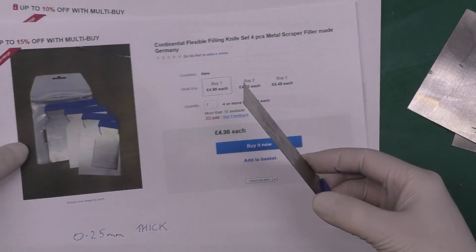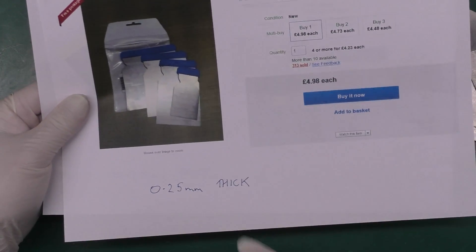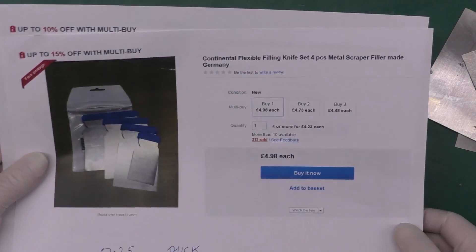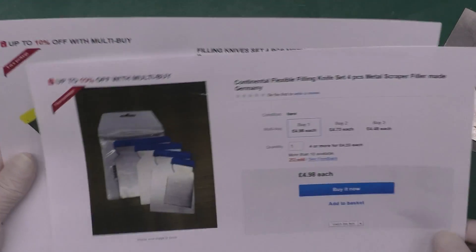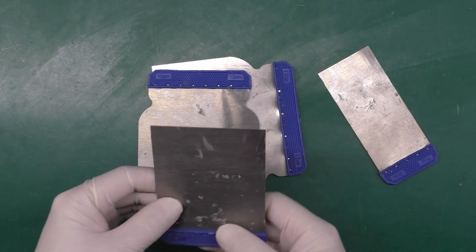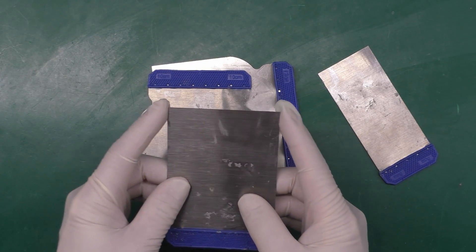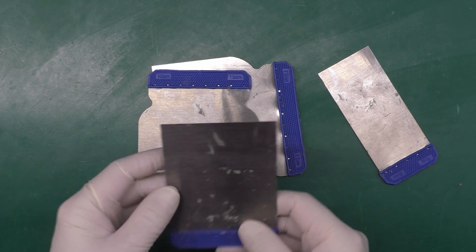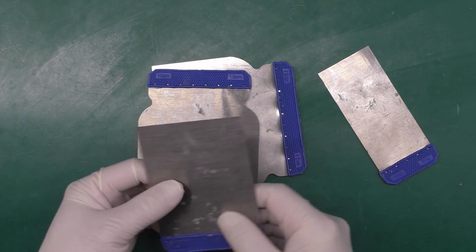For information, these ones here, the blades are actually 0.25 millimeters thick. It doesn't actually tell you in the ad, but just so you know that's the size that I'm using. For the PCB that I'm on my way to stencil, I'm going to use this one here because it's just slightly wider than the board itself, so that'll be perfectly sized for the job in hand.